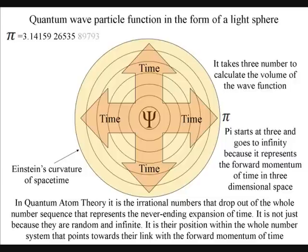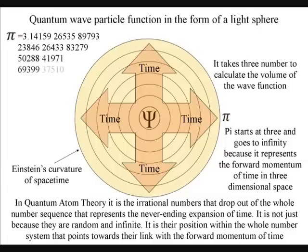But in quantum atom theory, it is the irrational number pi that drops out of the whole number sequence that represents the never-ending expansion of time. It is not just because it is random and carries on expanding forever.